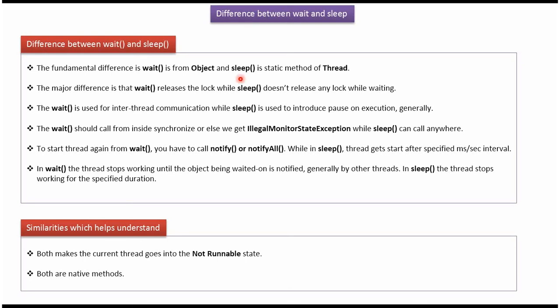The fundamental difference is wait method is from Object class and sleep method is from Thread class and sleep method is a static method.